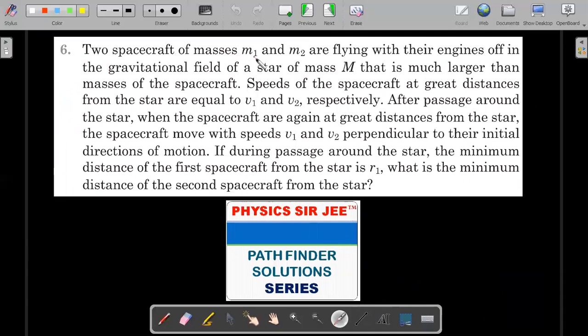Two spacecrafts of mass M1 and M2 are flying with their engines off in the gravitational field of a star of mass capital M that is much larger than masses of the spacecraft. Speeds of the spacecraft at great distances from the star are equal to V1 and V2 respectively. After passage around the star, when the spacecraft are again at great distances from the star, the spacecraft moves with the same speeds V1 and V2 as before, but perpendicular to their initial directions of motion. If during the passage around the star, the minimum distance of the first spacecraft from the star is R1, then what is the minimum distance of the spacecraft or the second one from the star in terms of these particular quantities that he has mentioned in the question.